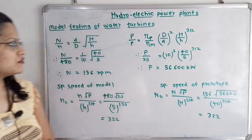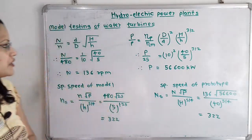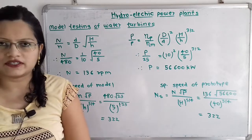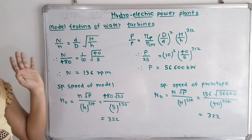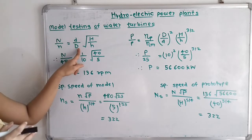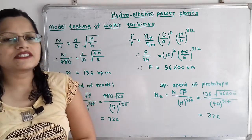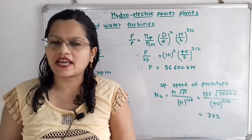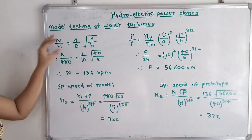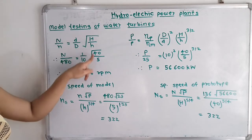Now we will move to the calculation part. First we will calculate the speed in RPM for the prototype. The relation is: capital N divided by small n equals small d divided by capital D, multiplied by the square root of capital H divided by small h. This gives the ratio of the prototype speed to model speed equal to the diameter ratio times the square root of the head ratio. Substituting known values: N divided by 480 equals (1/10) times the square root of (40/5).